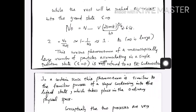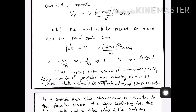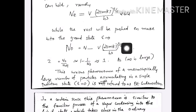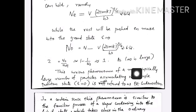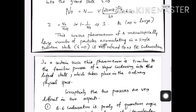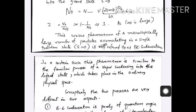This phenomenon of a macroscopically large number of particles accumulating in a single state — the ground state ε = 0 — is referred to as Bose-Einstein condensation. The basic idea is that a large number of particles crowd and accumulate in the condensed ground state, and that is referred to as Bose-Einstein condensation.